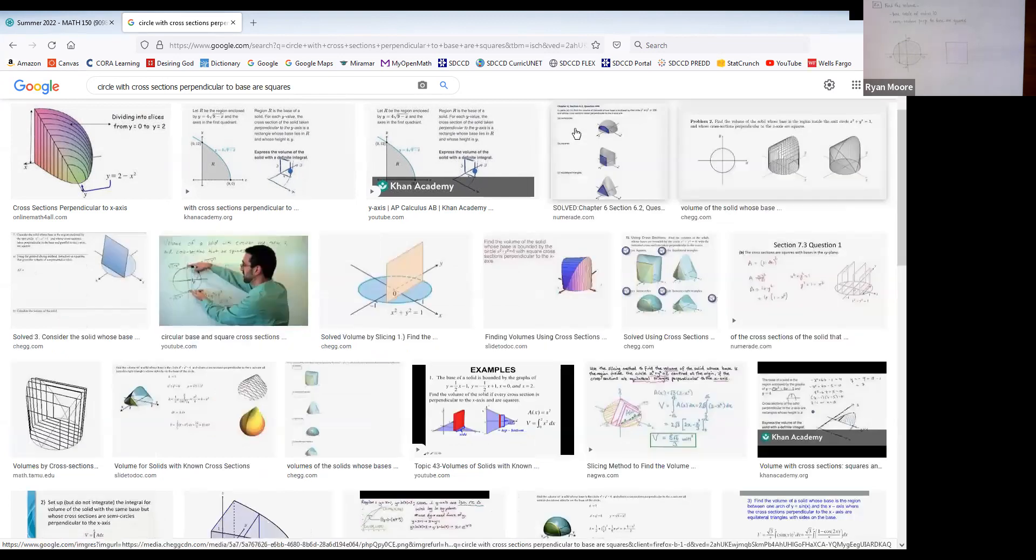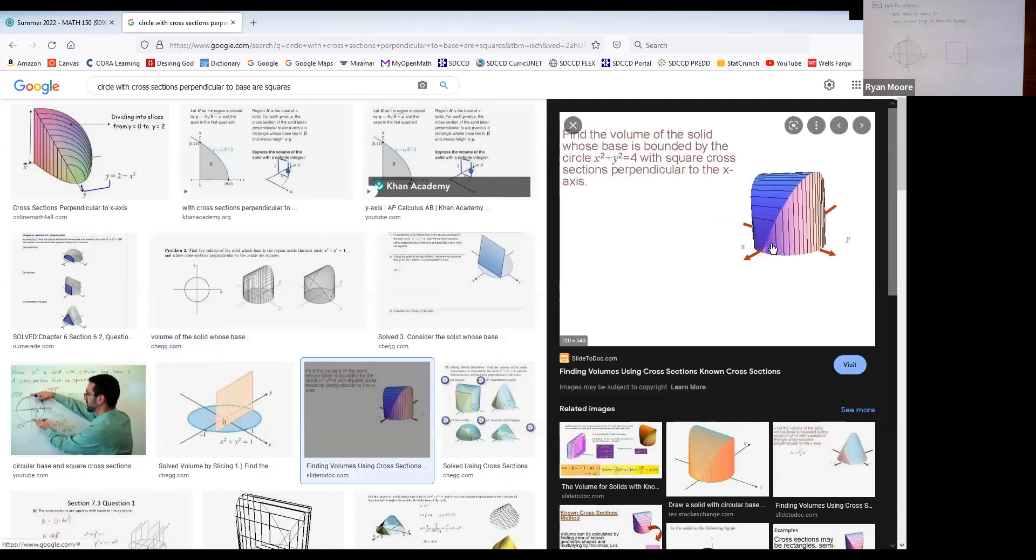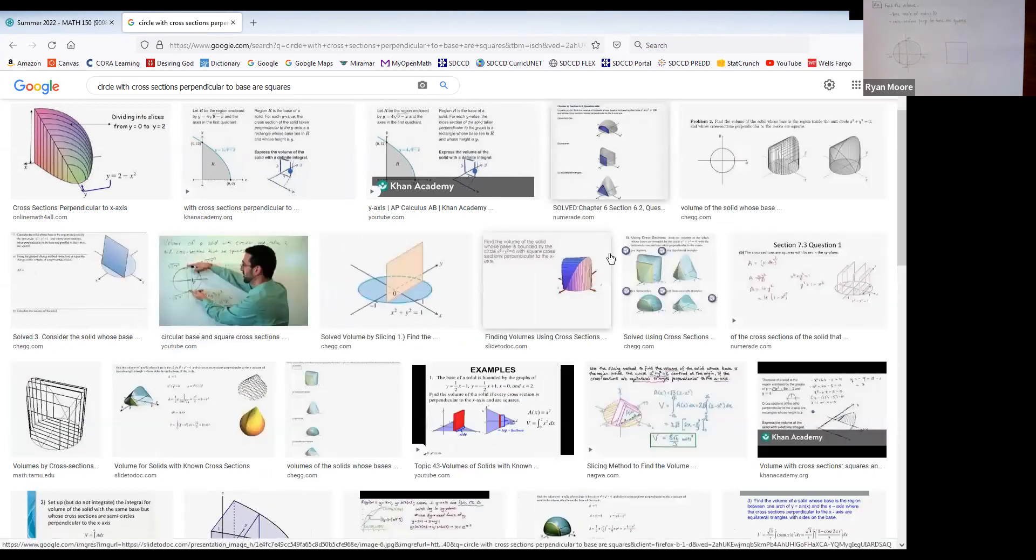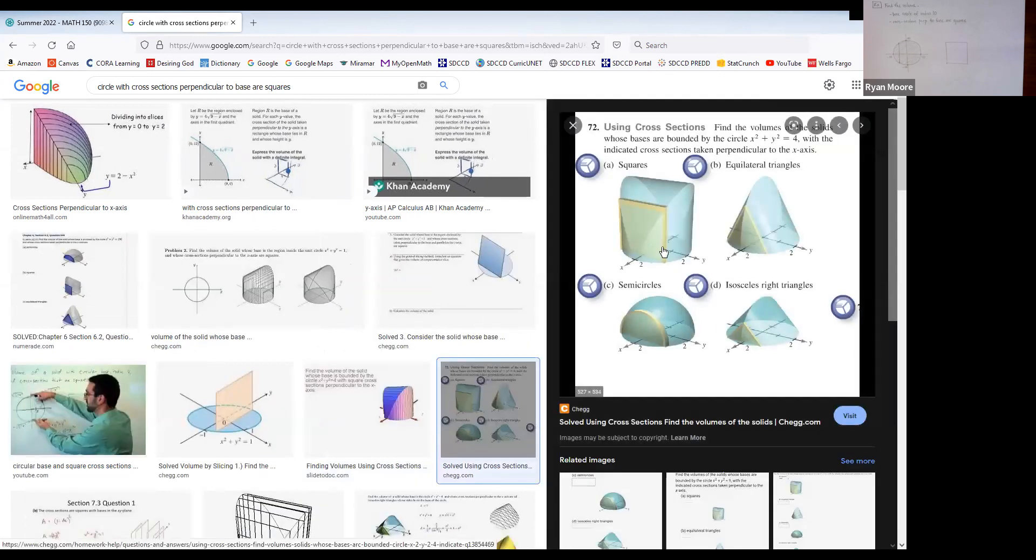Kind of cool I think. There are a couple other ones, here's another one where you can see it sort of pixelated a little bit. Here's one with several varieties. So this first one has squares, this one has cross sections as, looks like equilateral triangles, semi-circles, isosceles triangles, all with the circular base.